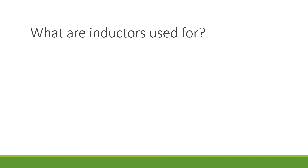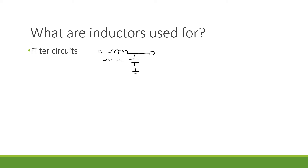What are inductors used for? One of the main applications for inductors is filter circuits. For example, this is a low-pass filter — it allows low frequencies to go through but blocks out high frequencies. An input signal is connected on the left, and if it's a low frequency signal, it passes through the inductor relatively easily and gets to the output on the right. A high frequency signal gets blocked by the inductor and cannot make it through.